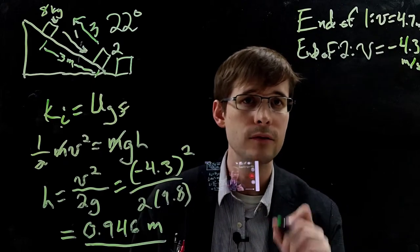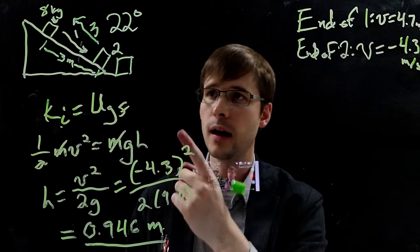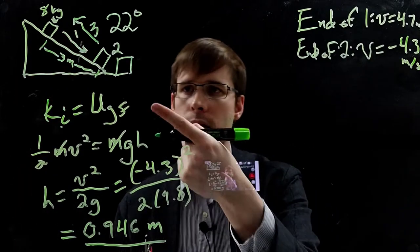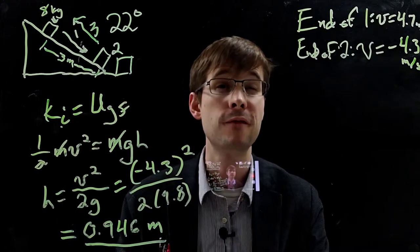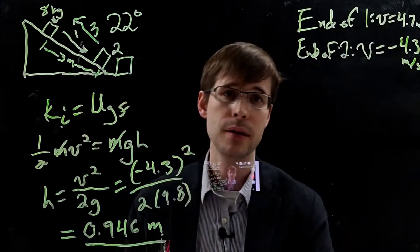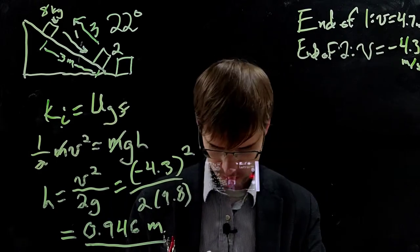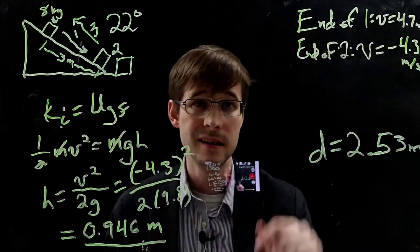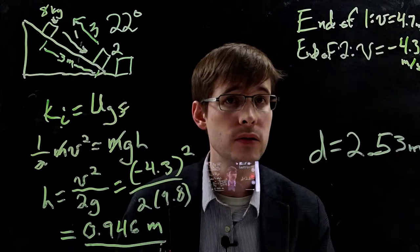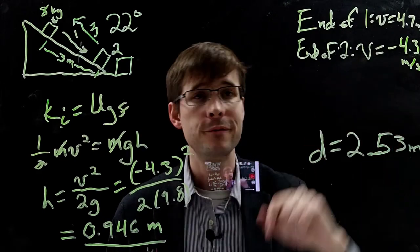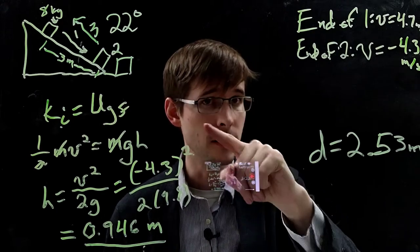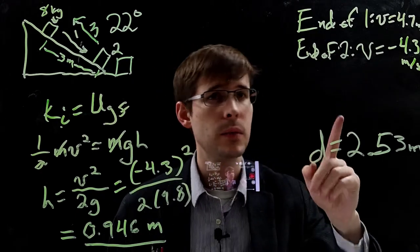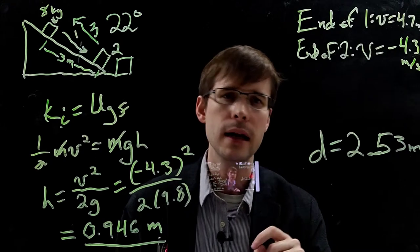And so we get 0.946 meters that it goes up. And that is measured in the y direction. That's the actual height that it reaches. If instead you wanted to calculate it, you might have accidentally calculated as it goes up the hill, how far up the incline it goes. That doesn't come out to be 0.946, but instead is 2.53 meters. These would be the answers for the questions. And with the intermediate values part way through of 4.7 meters per second, after the first part down at the bottom, and negative 4.3 meters per second after it bounces back up the incline.